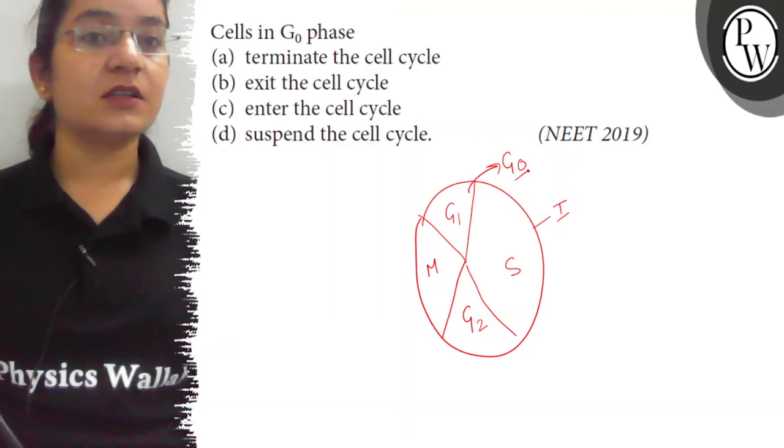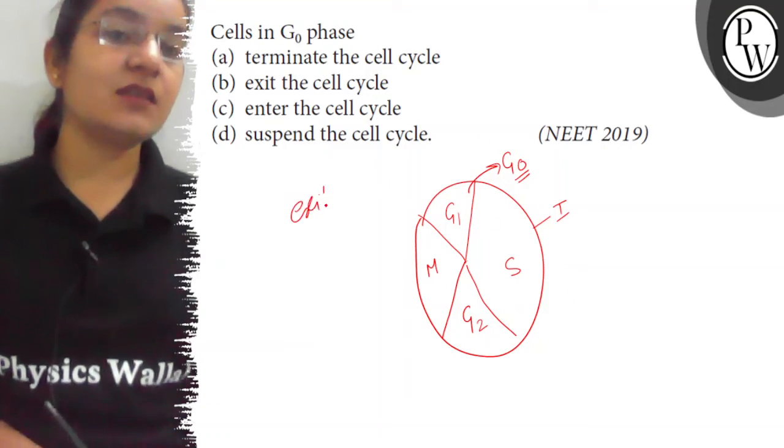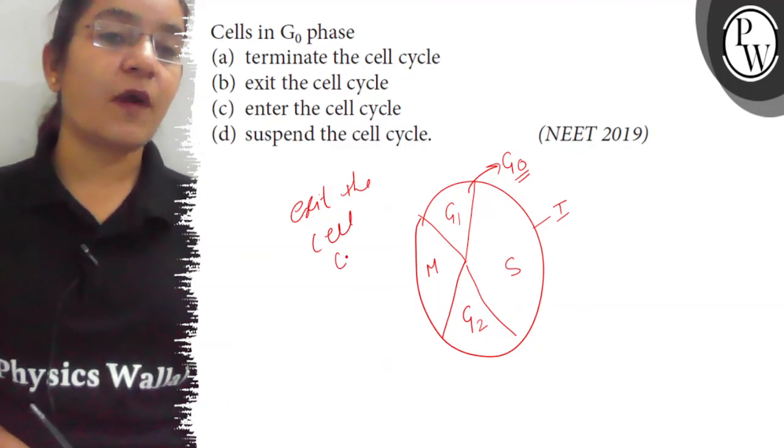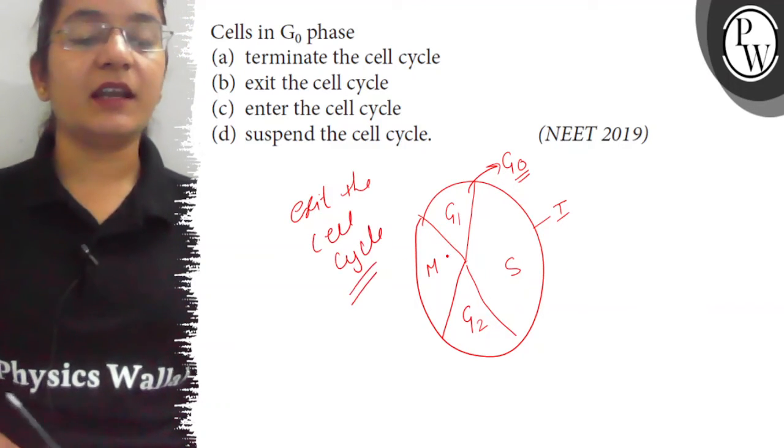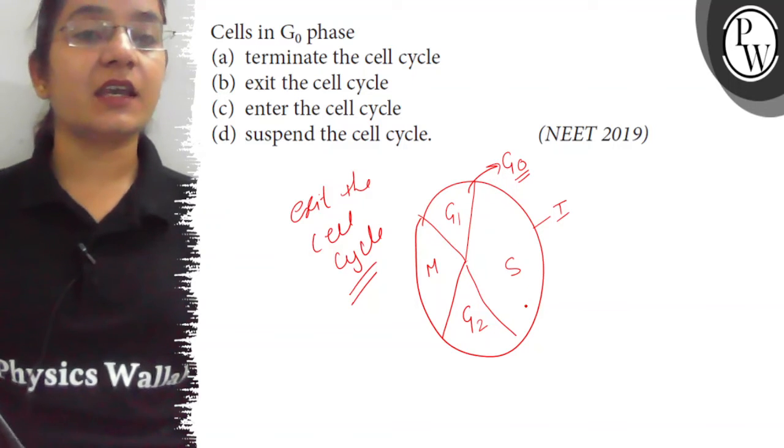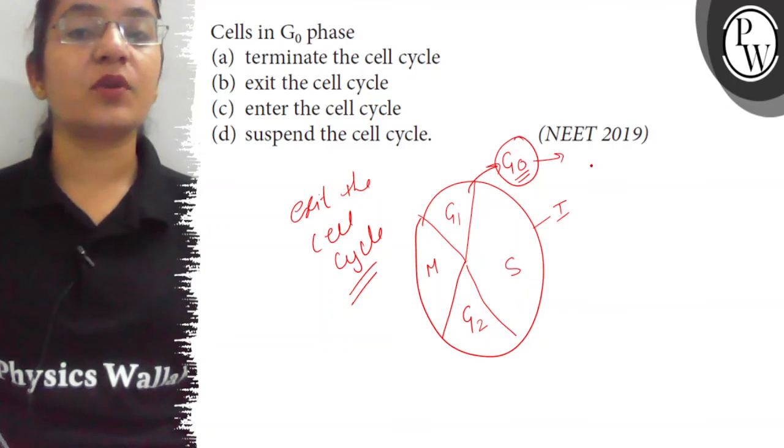G0 phase. Means when the cell exits the cell cycle, cell does not need to divide further. Cell ko ab divide nahi karna hai toh woh cell cycle ko exit karke kaha enter ho jayega G0 phase, also known as quiescent phase.